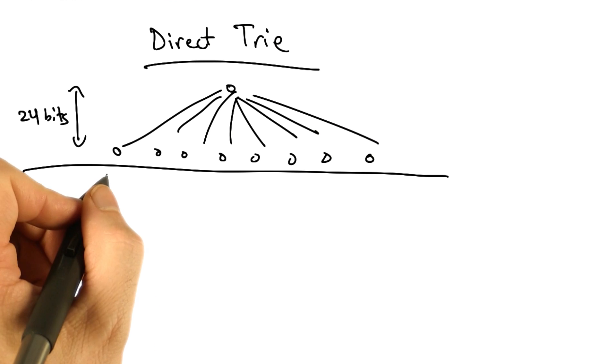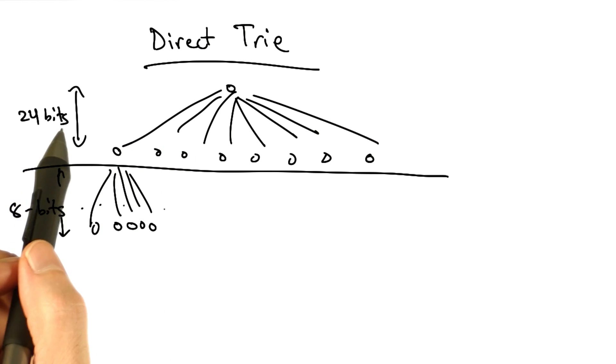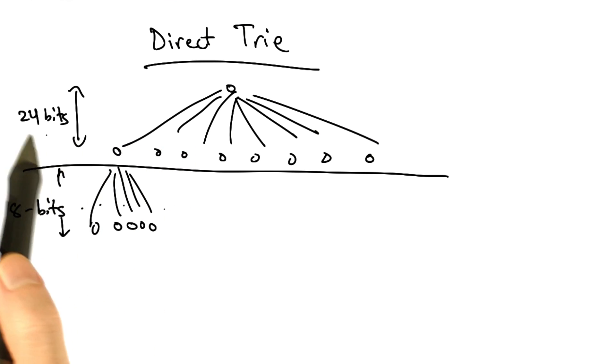So for example, we might have a two level trie, where the first memory access is dictated by the first 24 bits of the address, and the second memory access is dictated by the last 8 bits of the address.